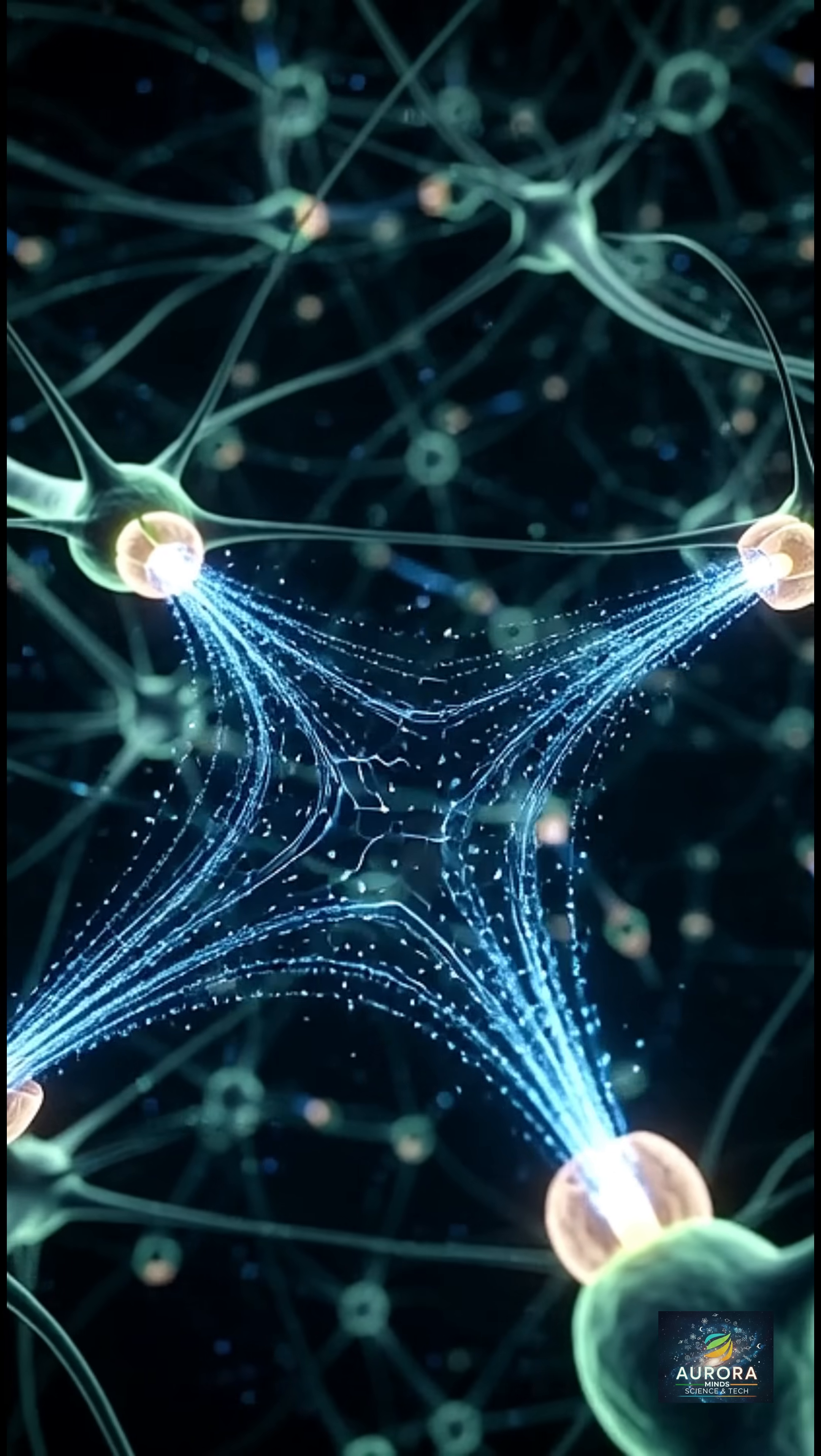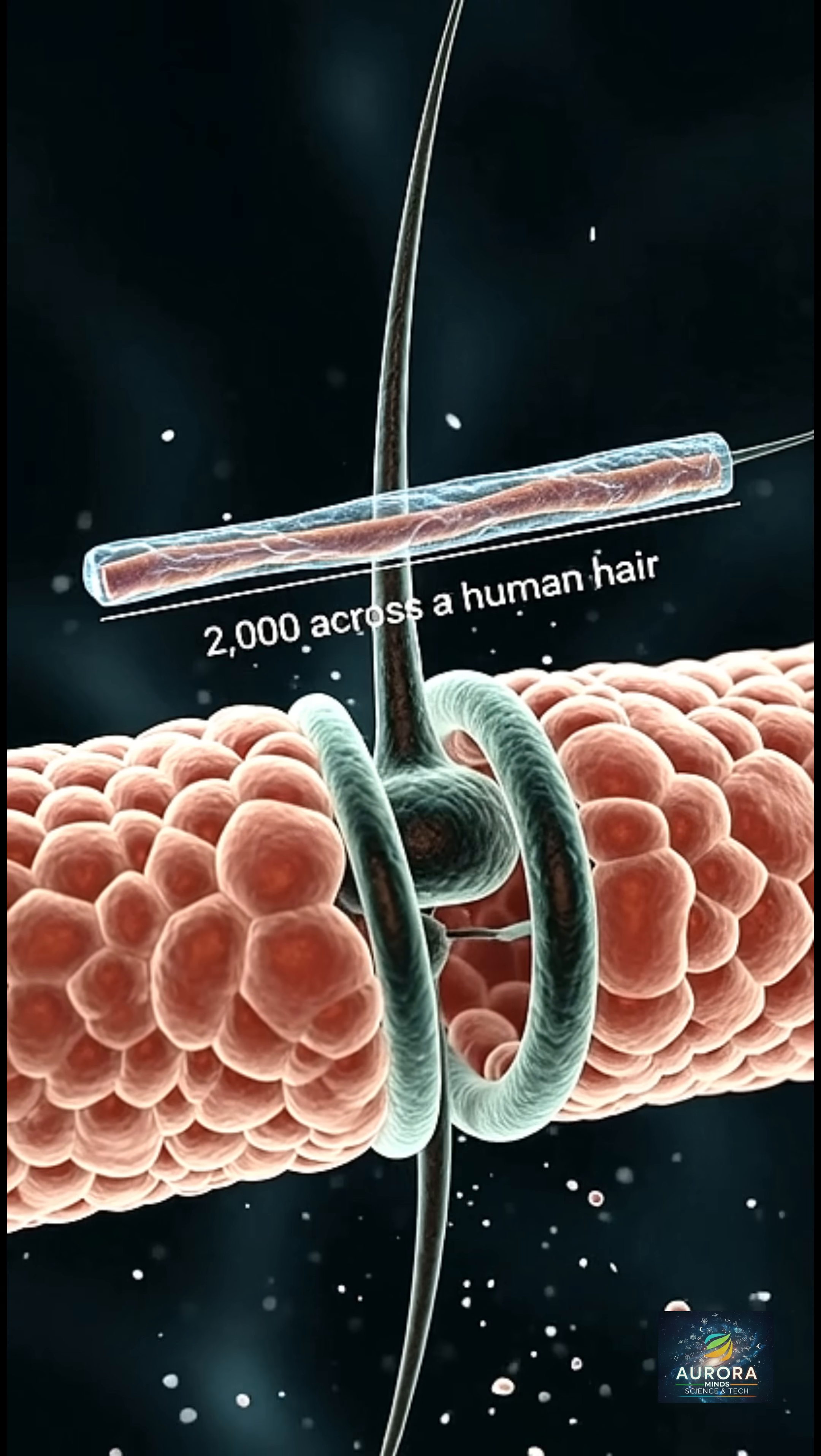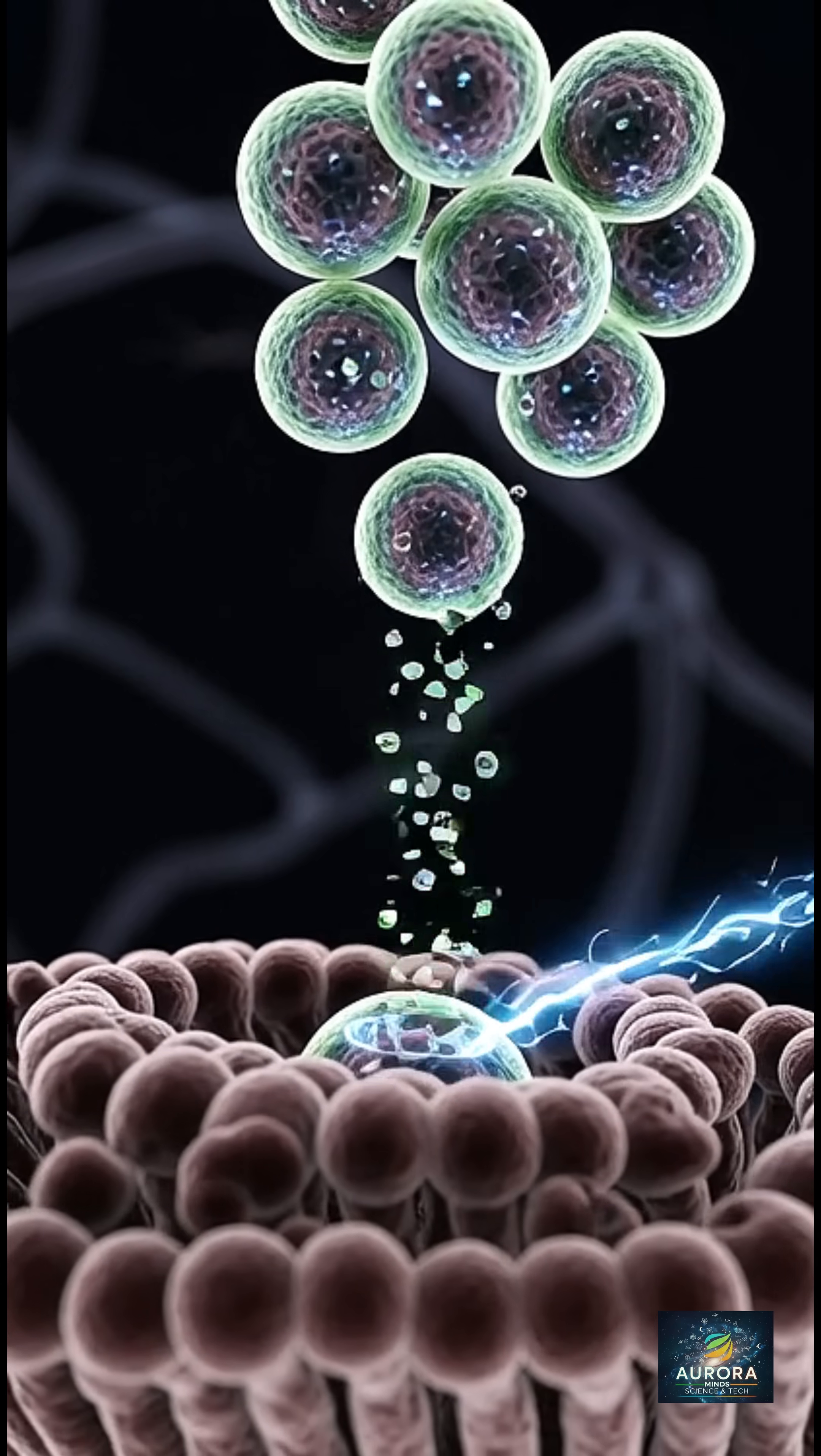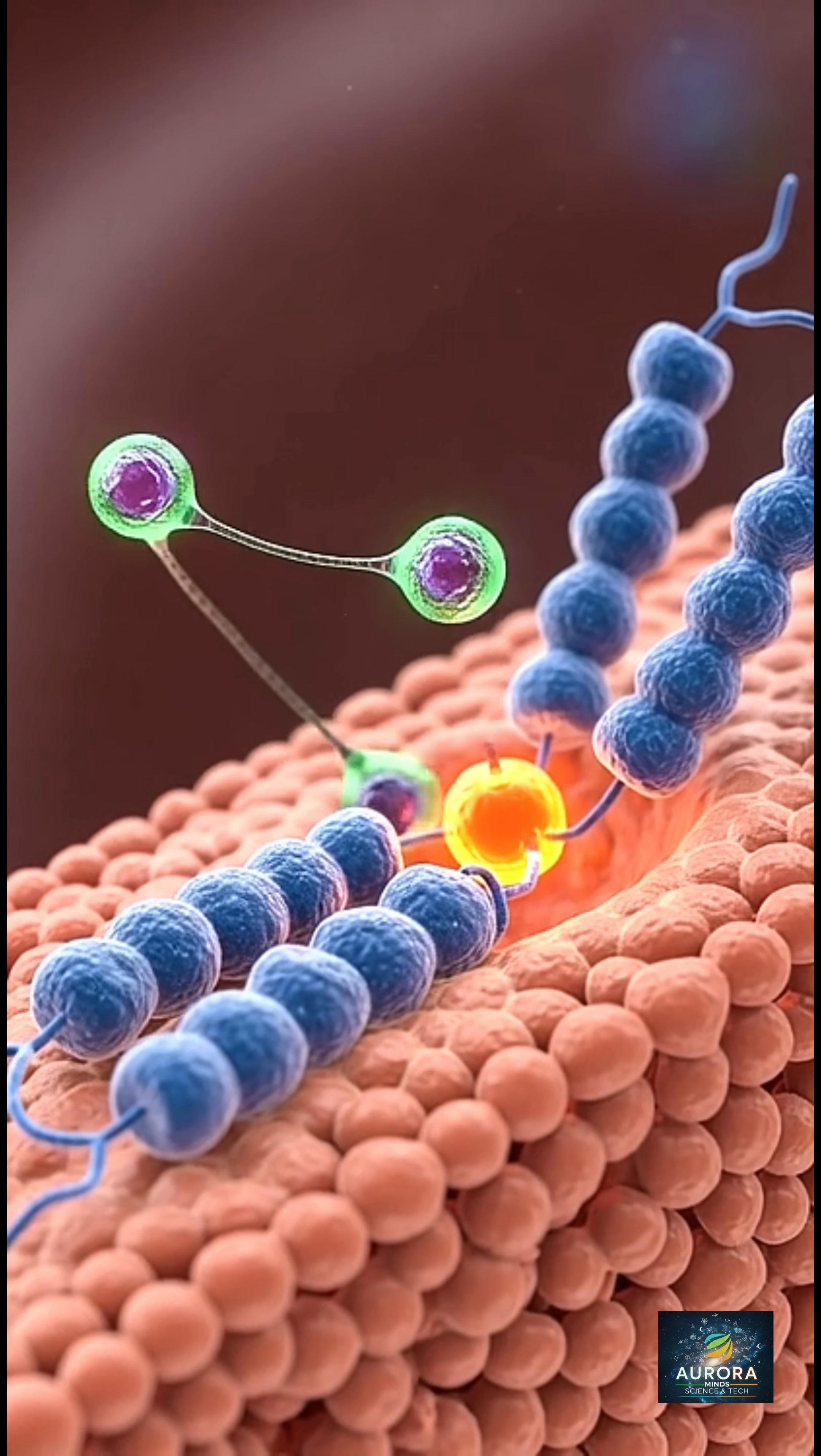How does it work? The electrical spark releases chemical messengers, neurotransmitters, from tiny sacs. These float across the gap and lock into specific receptors on the next neuron, like a key fitting a lock, creating a new electrical signal.